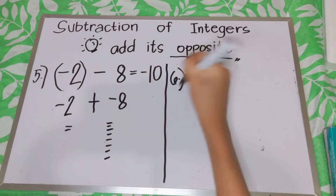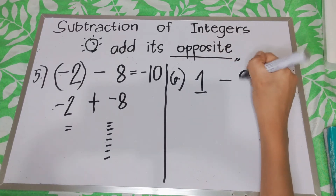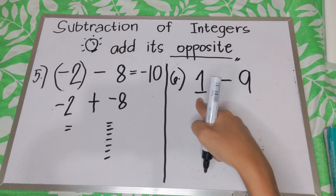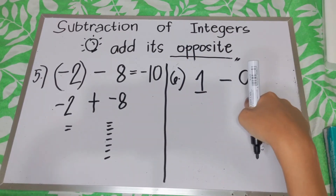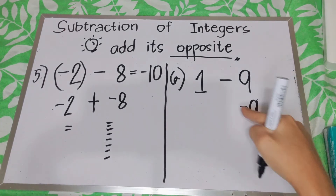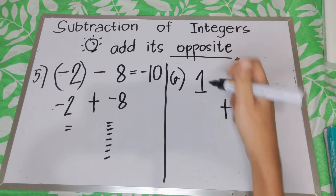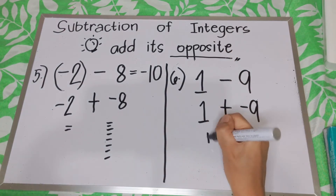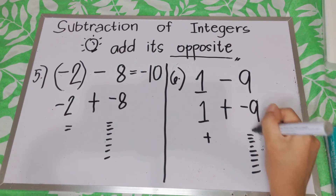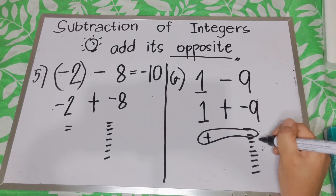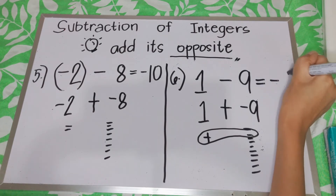For number 6, say we have 1 minus 9. So 1 is positive and 9 is positive. What is the opposite of 9? This will be negative 9, then we're going to add. We count 1 positive and 9 negatives. One pair cancels to 0, leaving 8 negatives. Therefore, the answer is negative 8.